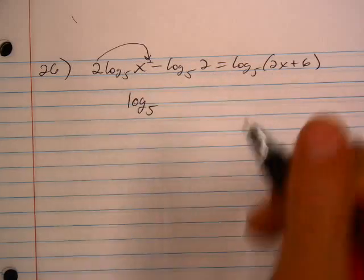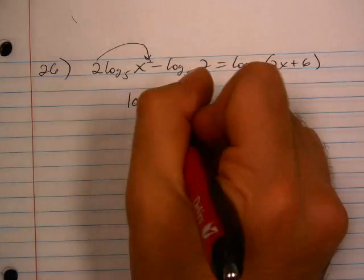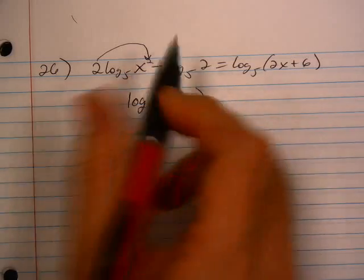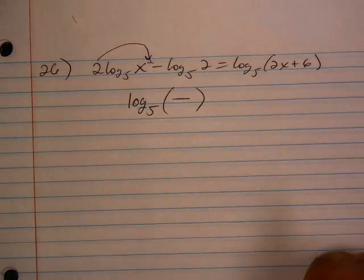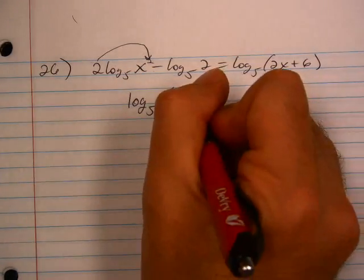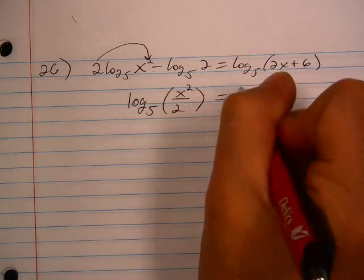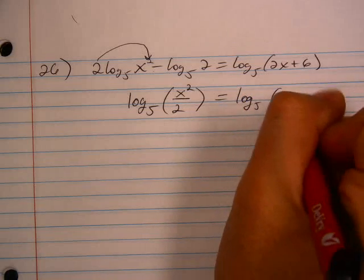When we condense, we still have that little base 5. But now, again, this minus, this fraction, or the subtraction becomes the fraction. x squared is on top. This two now goes on the bottom. The right side hasn't changed.